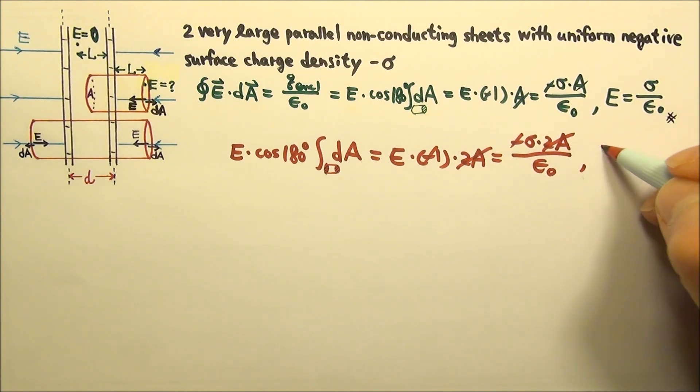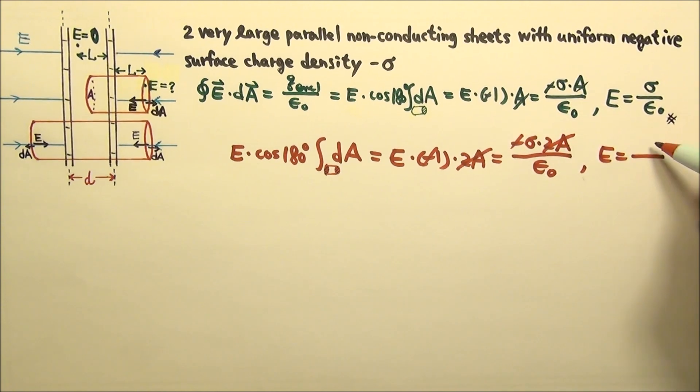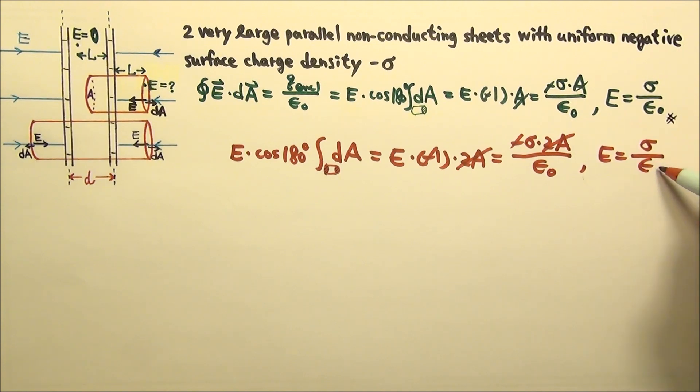And again, of course, we're going to get the same answer. The E is sigma over epsilon naught.